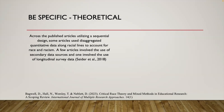The vague version reads: 'Across the published articles utilizing a sequential design, some articles used disaggregated quantitative data along racial lines to account for race and racism. A few articles involved the use of secondary data sources, and one involved the use of longitudinal survey data.' Yes, we did tell what we did, but it's probably leaving you wanting to know more. You want a little more detail so you can create a better vision of what happened during the study. This is an example of yes, you've told us what you've done, but there's room to improve and make it more specific.